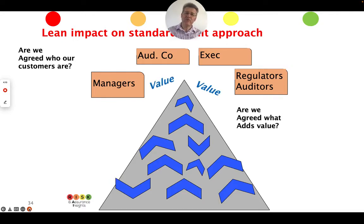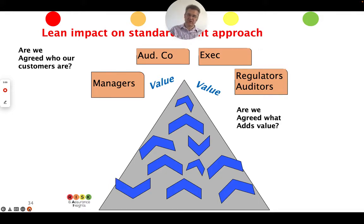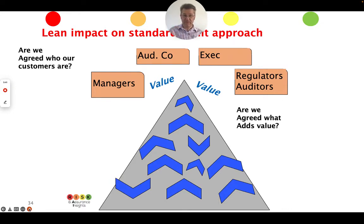Are we really clear about what adds value? I mentioned the Kano technique. This technique in lean auditing looks at delighters, satisfiers, and dissatisfiers, and really analyses what the internal audit department is doing — what's it doing to dissatisfy the business? How often is the internal audit department delighting the organisation? You can think about that for yourself whether you're watching with an internal audit hat on, or an audit committee or some other function.